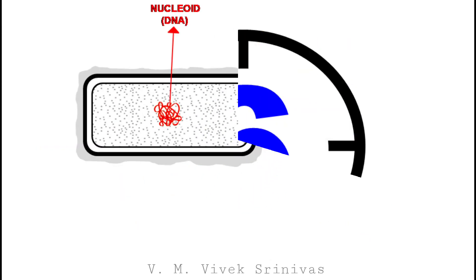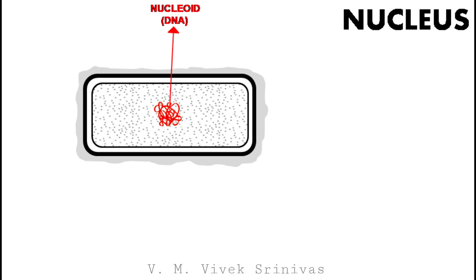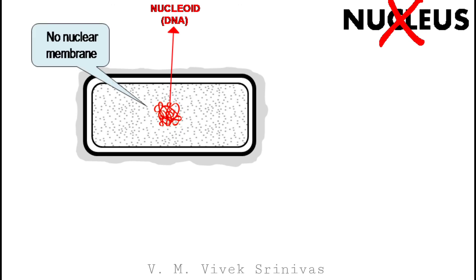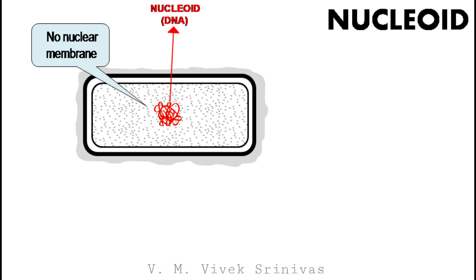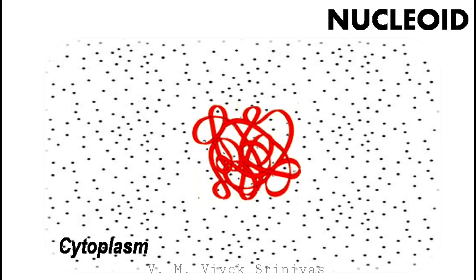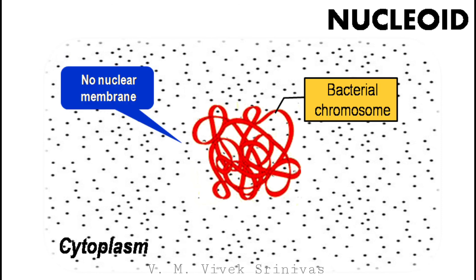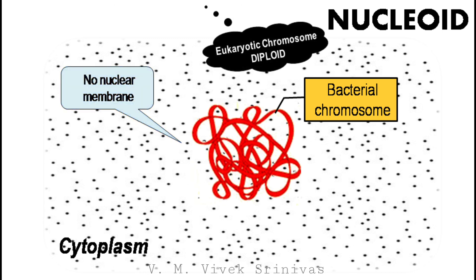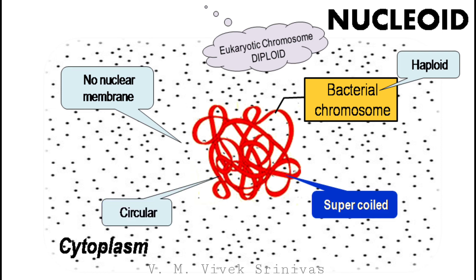The next structure is the nucleoid. In contrast to eukaryotic cells, the term nucleus cannot be used for bacteria, because the nuclear membrane that separates the nucleus from the cytoplasm is absent. Here, the genetic material inside the bacterial cell is referred to as the nucleoid. Since the bacterial chromosome does not have a nuclear membrane, it is also referred to as the naked DNA. Unlike eukaryotic cells, the bacterial chromosomes are haploid, circular, and a supercoiled structure.